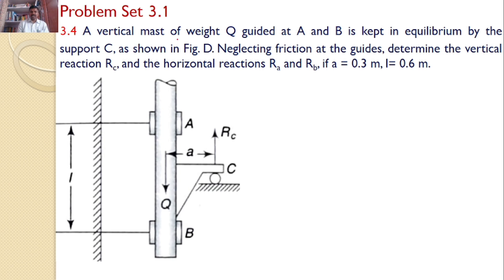A vertical mast of weight Q guided at A and B is kept in equilibrium by the support C, as shown in the figure. Neglecting friction at the guides, determine the vertical reaction Rc and the horizontal reactions Ra and Rb if a equals 0.3 meters, L equals 0.6 meters.